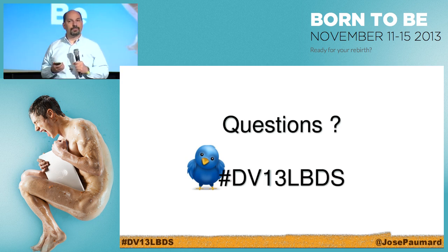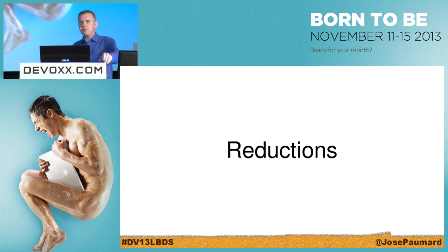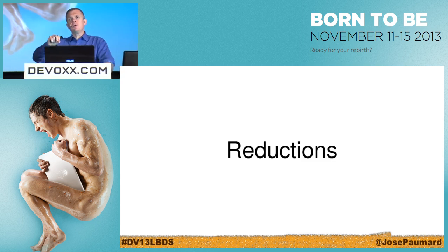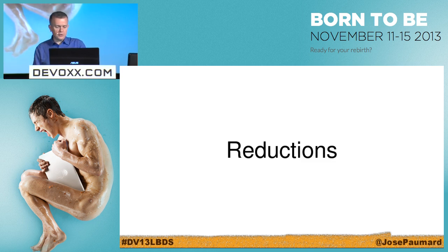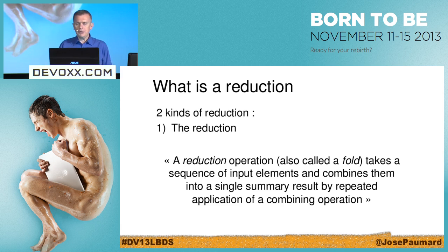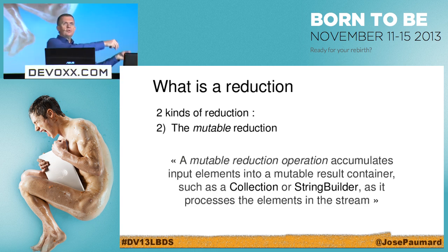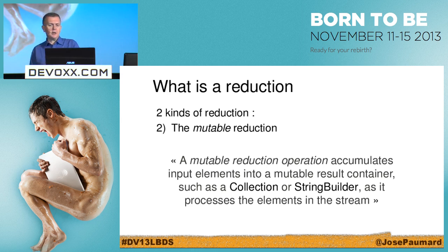Let's talk about reduction — most of the time the final step of computation, the triggering operation. There are two kinds of reduction in the API. The first kind is plain reduction — the fold we saw at the beginning, for instance sum, average, min, max, and so on. The second kind is mutable reduction — about accumulating elements into a container, changing and repackaging computed elements from the source and accumulating them in a result container such as a collection or a StringBuilder.